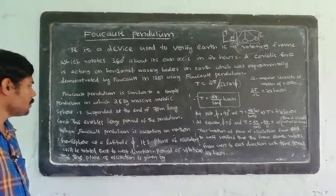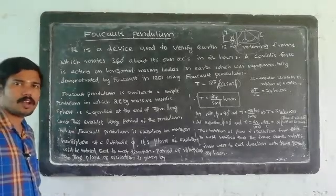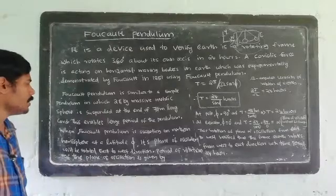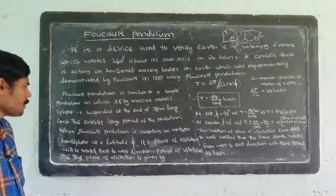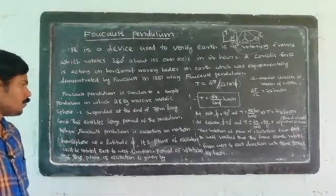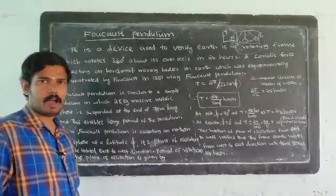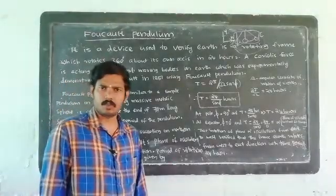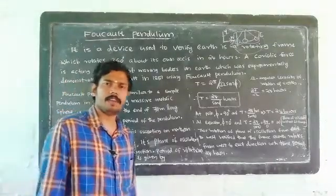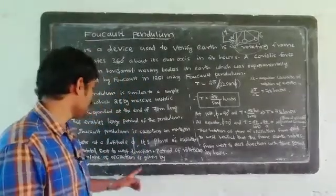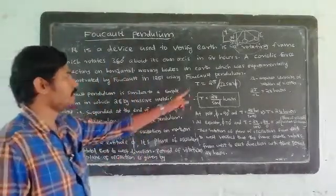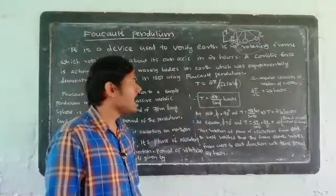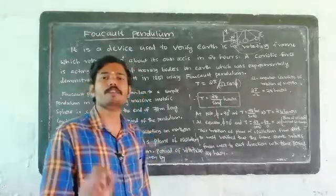If we place the Foucault pendulum in the northern hemisphere, there are different latitudes — for example 10 degrees, 20 degrees. We are talking about the rotation of the plane of oscillation in the east-to-west direction. The plane of oscillation of the Foucault pendulum rotates, and this depends on the latitude φ where it is placed.